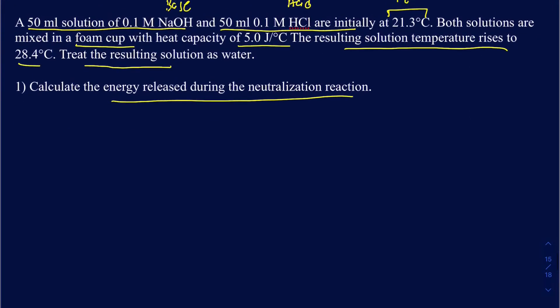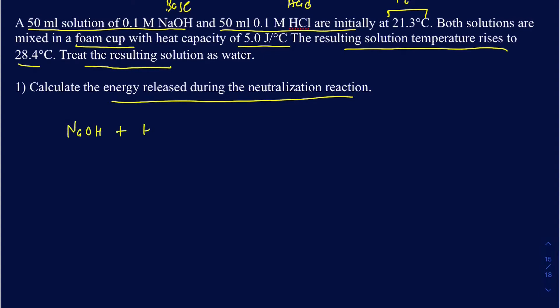Before doing anything, write down the reaction. We have NaOH, our base, reacting with HCl, and it's going to make H₂O. Remember, one of the products for an acid-base reaction is always water, and the other is the salt — which is NaCl in this case. Before doing anything, make sure your reaction is balanced, and it seems like everything is balanced.